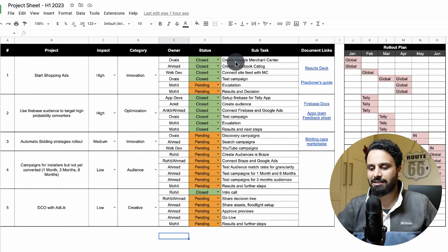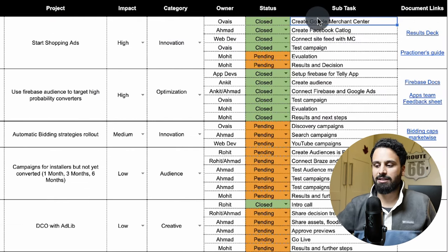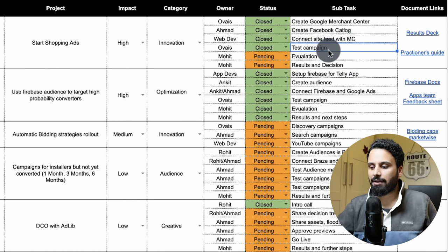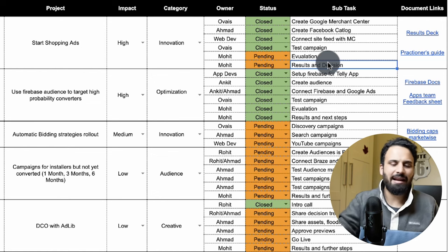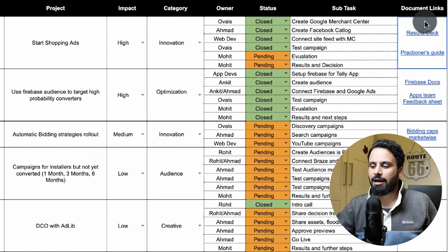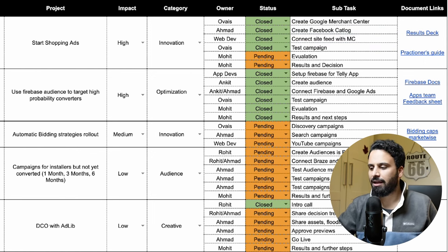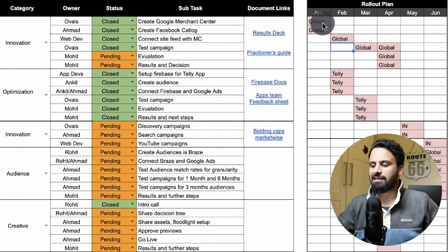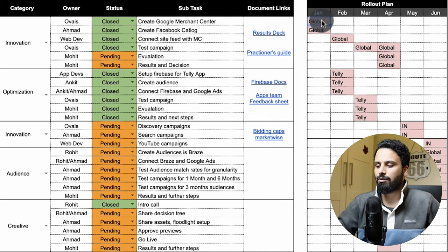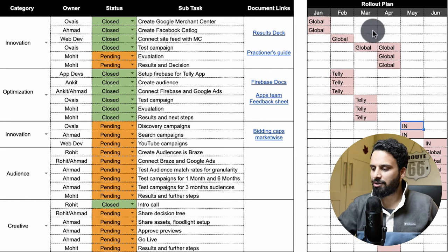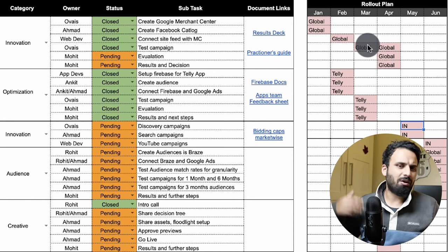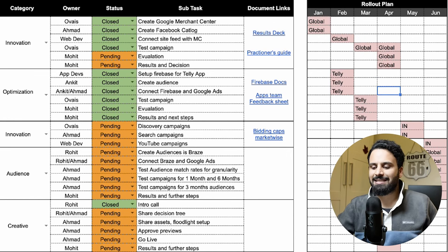For example, to start Shopping Ads, you would first create a Google Merchant Center, then create a Facebook catalog, connect the site feed with Merchant Center, test a campaign, evaluate results, and decide whether to roll it out across all products or categories. Document everything — results, links, help center articles — and note which month each subtask will be completed. If you are in multiple markets, specify which country or website you will test first, then work your way out from there.